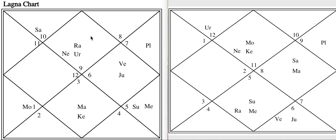Now let us look at the lagna chart first. The lagna lord is in the tenth house — one of the best placements in any chart. The lord of the eleventh is also in the tenth — another fantastic placement. The lord of the ninth and the tenth, Sun and Mercury, are conjunct in the ninth house forming Dharma-Karma-Adipati Yoga. This is a phenomenal chart — very rare — and this person has the capacity to change society and do revolutionary things, which he has been doing.